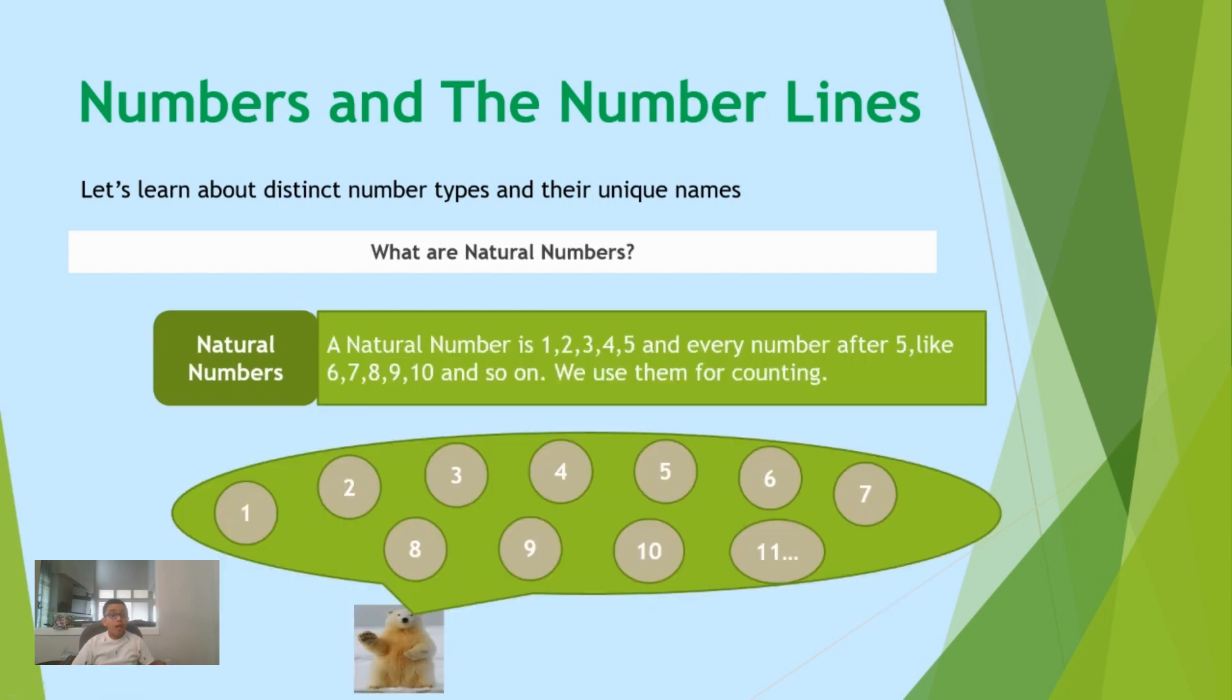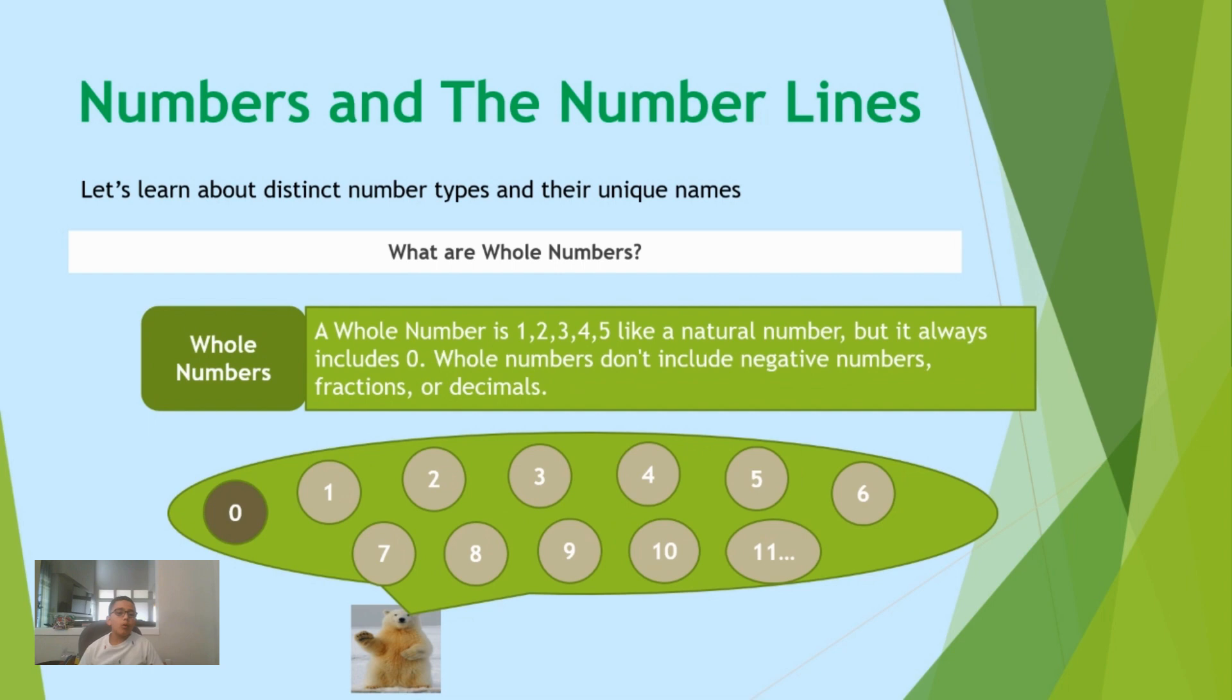Do you know what natural numbers are? They're the numbers we use for counting every day, like 1, 2, 3, 4, 5, 6, and so on. Now let's know what whole numbers are. Whole numbers are just like natural numbers, but they also include zero.